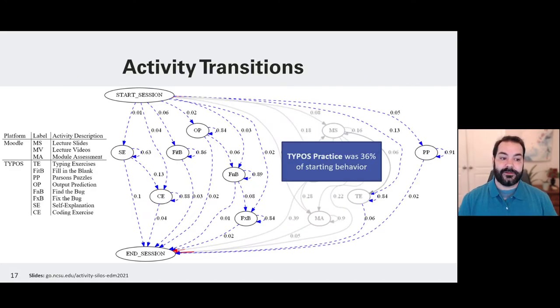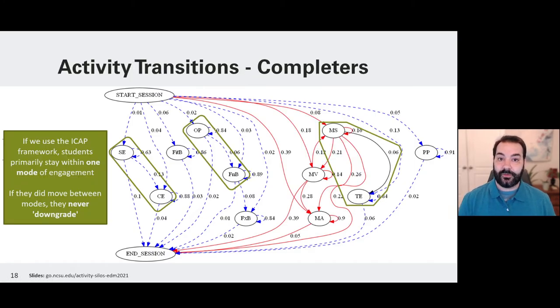However, 36% of their starting behaviors also involved Typos practice. Each individual exercise doesn't have a large percentage, but if we were to add all of these up, it does come up to 36%. One thing to take note of is you may notice that something like the fill-in-the-blank activity here, this would be the start of a session. They do the fill-in-the-blank, and they repeat through this, and then the highest probability was that they would end the session. However, when a student would then go to another activity, they always either stayed at the same ICAP level or upgraded. They would never downgrade.